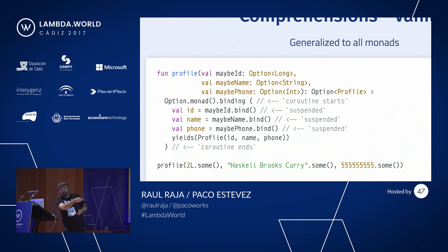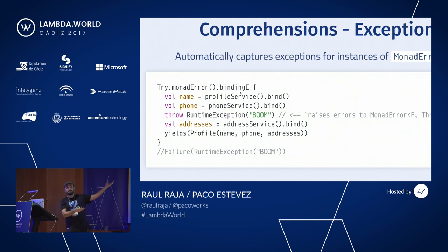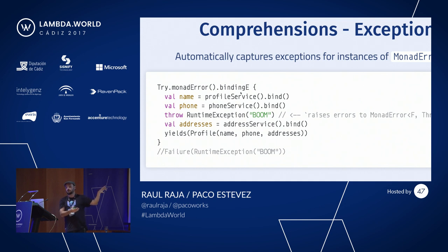For example, Option is a data type that just combines monadically, but you may also have monad error as another instance. Try can have a monad error instance for Throwable, Option for Unit, and Either for any type E that you make parametric. In the case of monads that can potentially throw errors — which is common when dealing with Java code in Kotlin land, because we are in an ecosystem with a lot of impurity and exceptions — our for-comprehensions can automatically capture exceptions and lift them to the context of the monad error in scope for you.